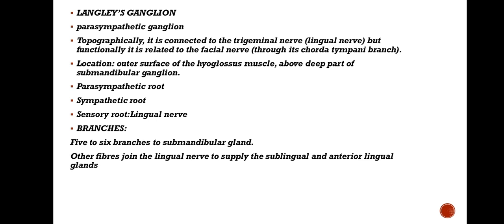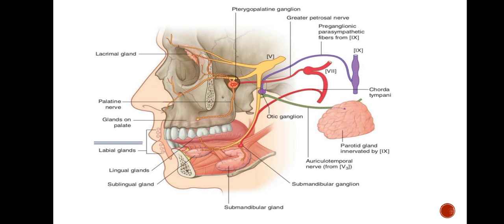Topographically, it is connected to the trigeminal nerve, whereas functionally it is related to the facial nerve through its chorda tympani branch. It has three roots: parasympathetic, sympathetic, and sensory. In this figure, the red color structure denotes the sub-mandibular ganglion which gives its branches to the sub-mandibular gland.